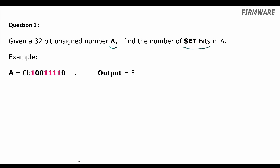Alright, let's look into a solution. We have an example case of A equal to 10011110. So here the answer would be 5. We could always loop through the bits of A one by one starting from one side and check and count if the bit is 1.